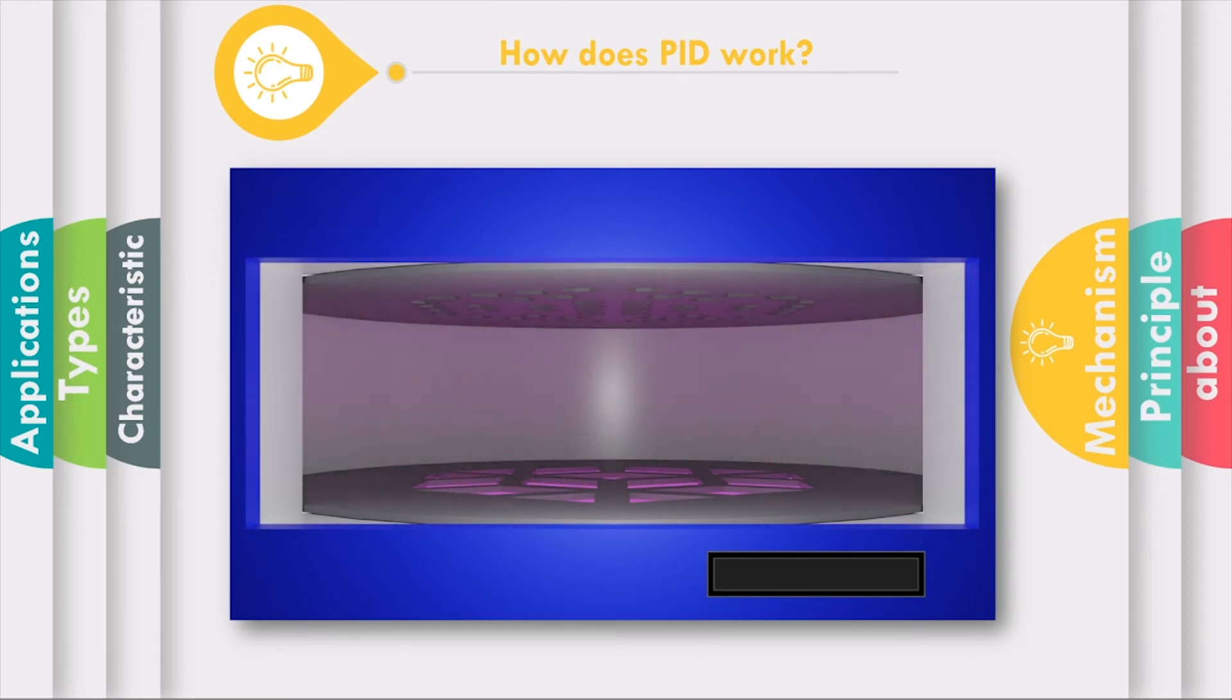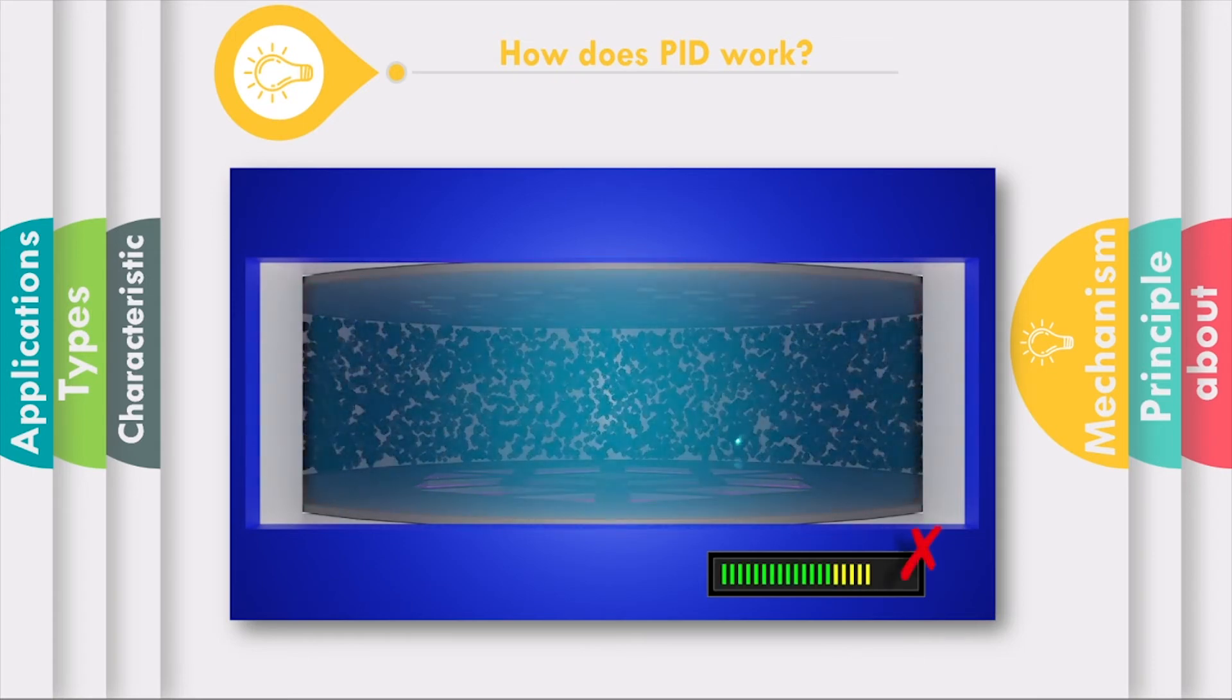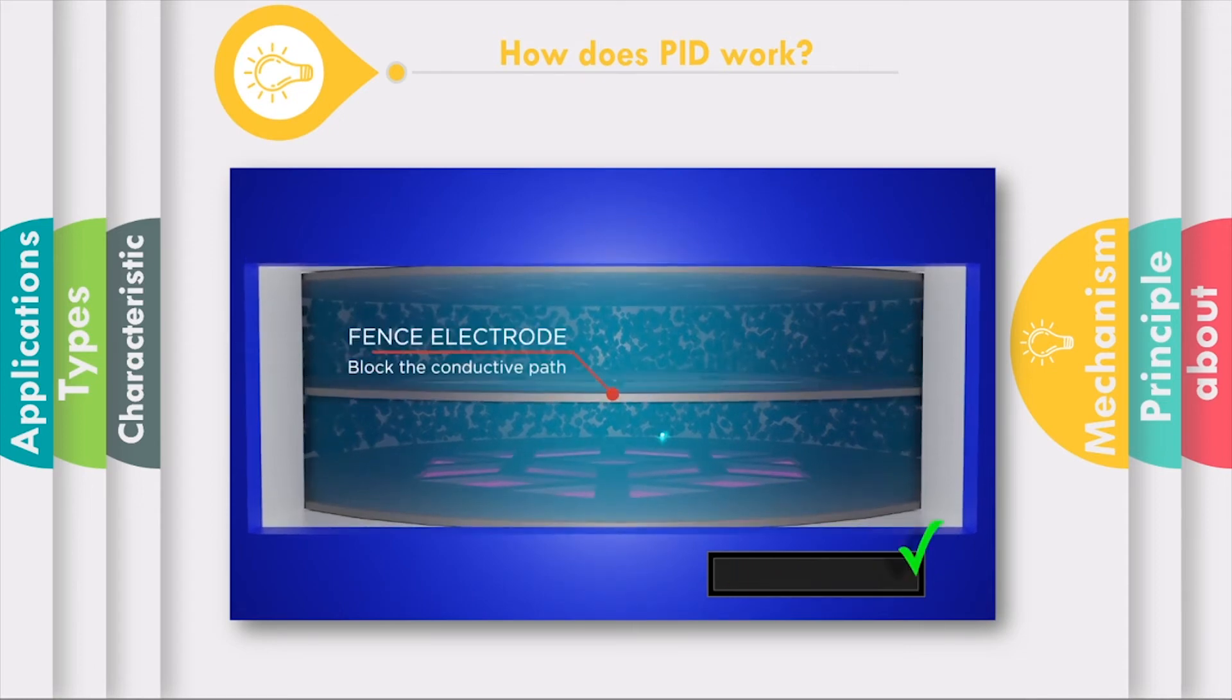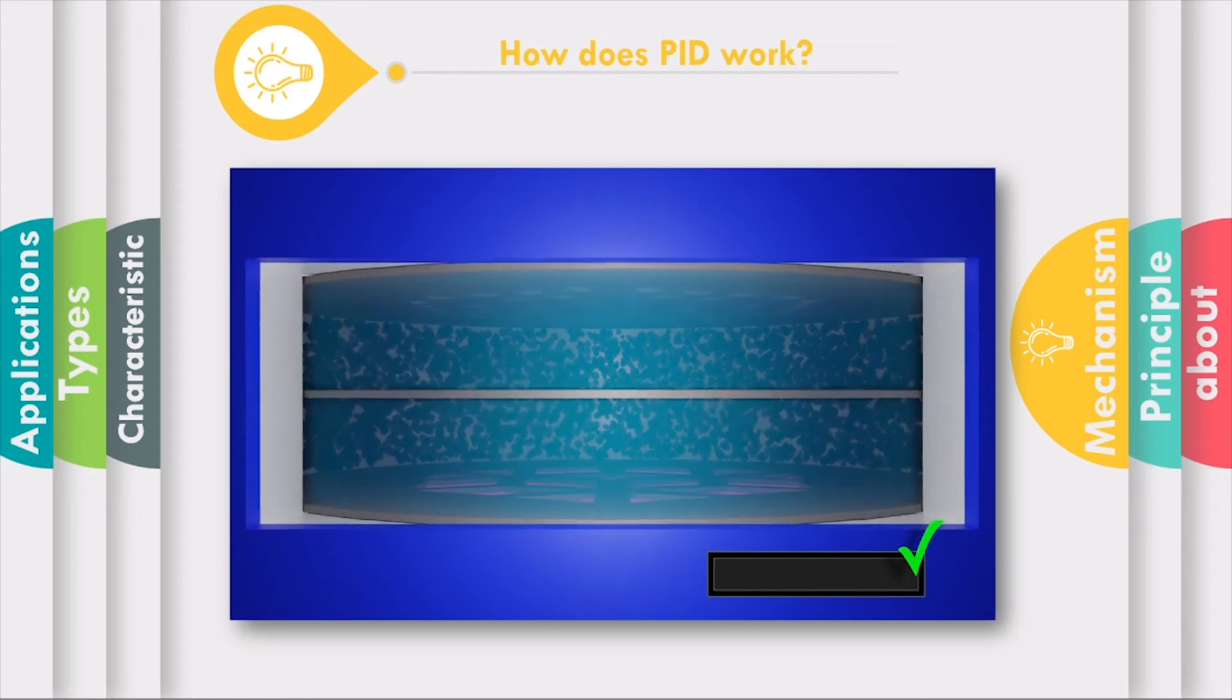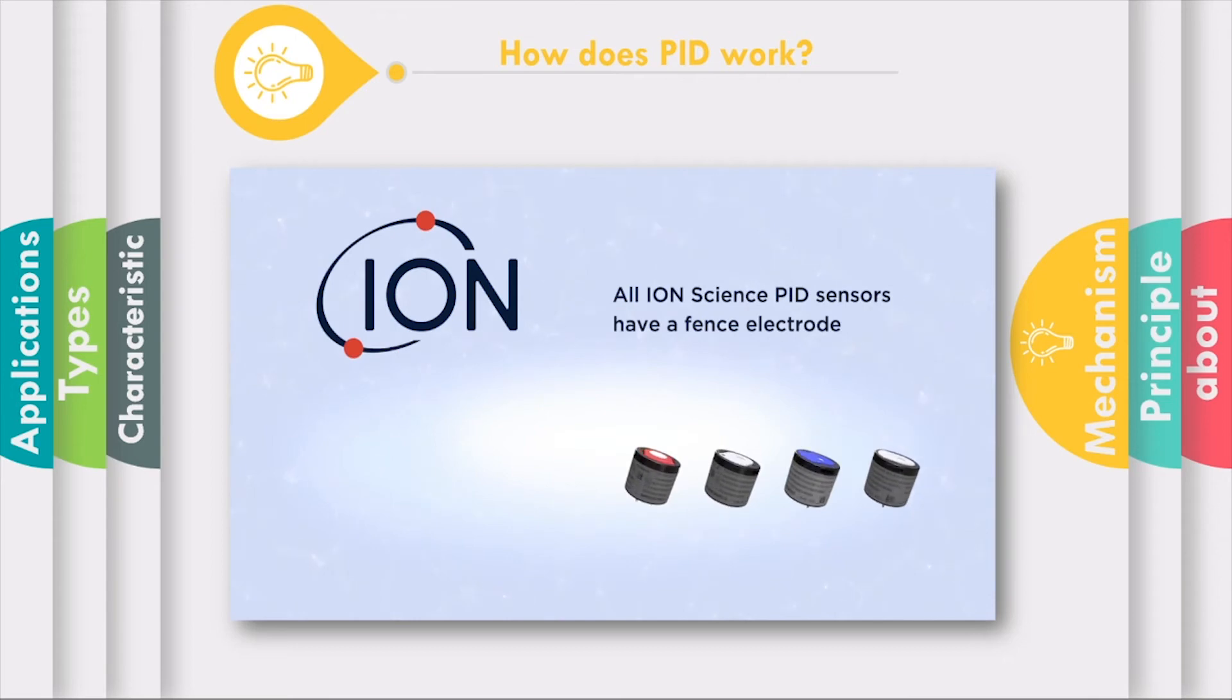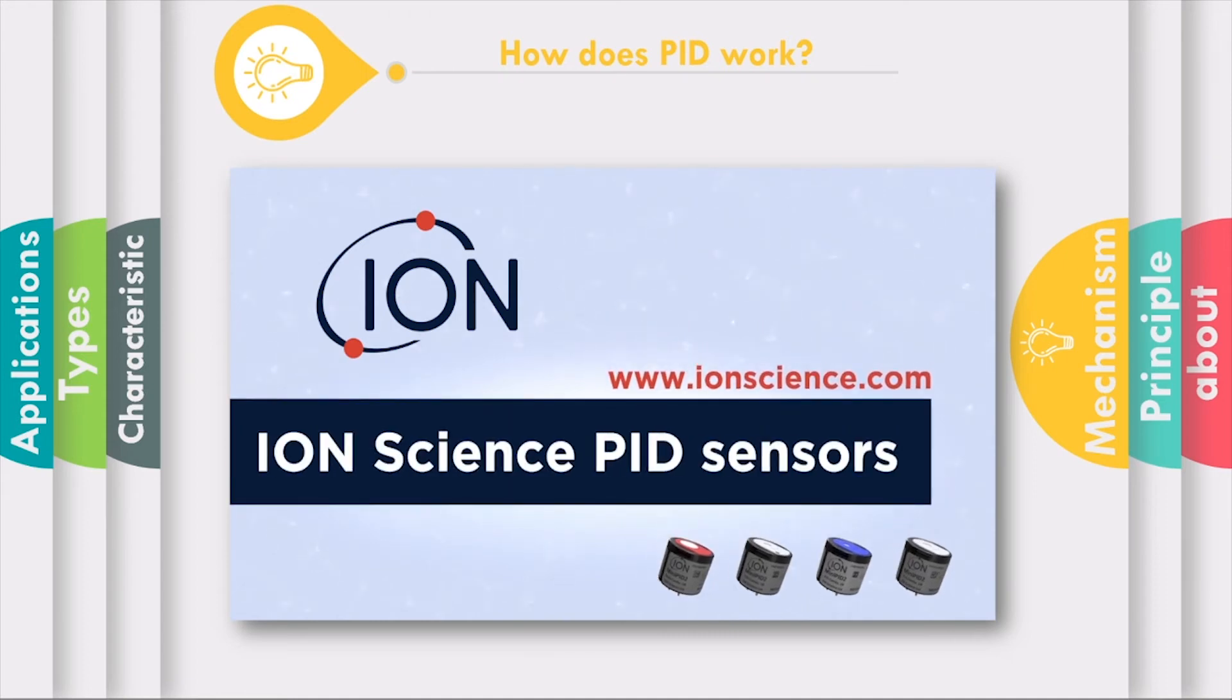Over extended periods, even the IonScience sensor chamber may become contaminated. The IonScience fence electrode blocks the path between the two main electrodes. This practically eliminates the effects of humidity. Needless to say, all IonScience PID sensors have a fence electrode and an anti-contamination system offering superior performance.